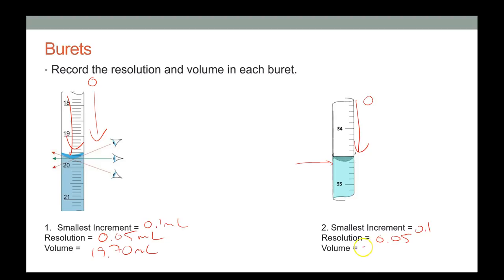When reading any measuring device: find the smallest increment, divide by two, and make sure you have a number in that decimal place.